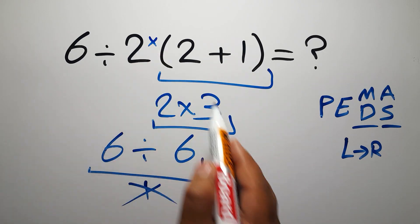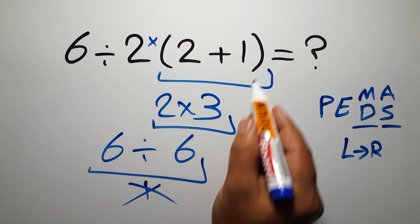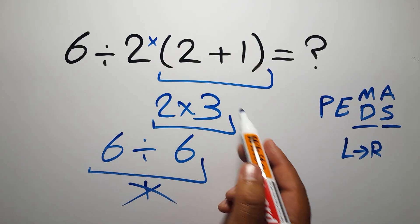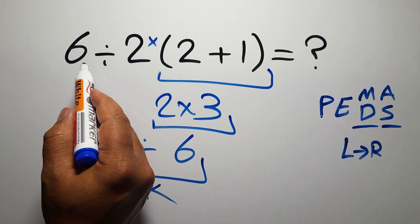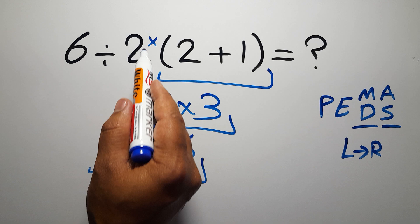Okay, so first we have to do these parentheses, and after these parentheses we have to do this division, and finally this multiplication. If you do this multiplication before this division, it is wrong.